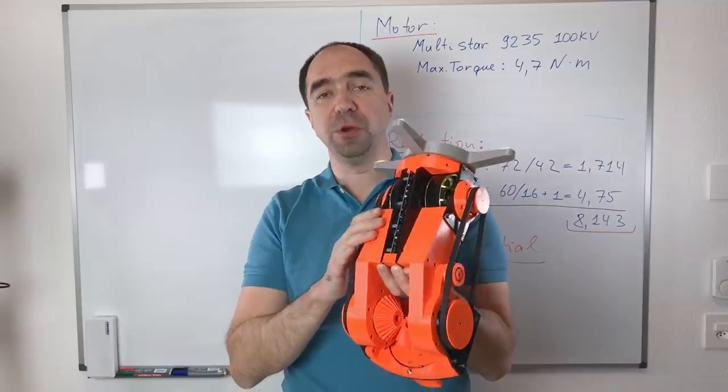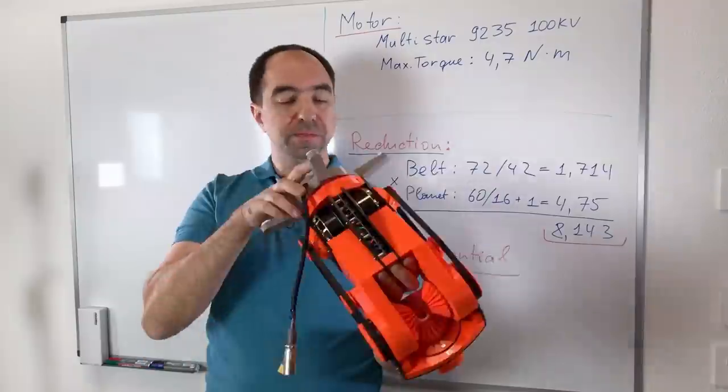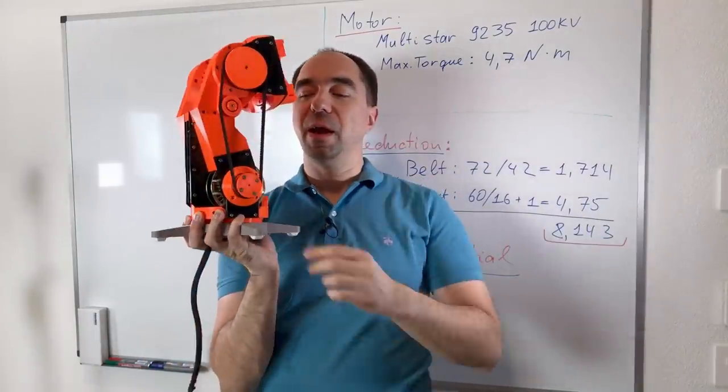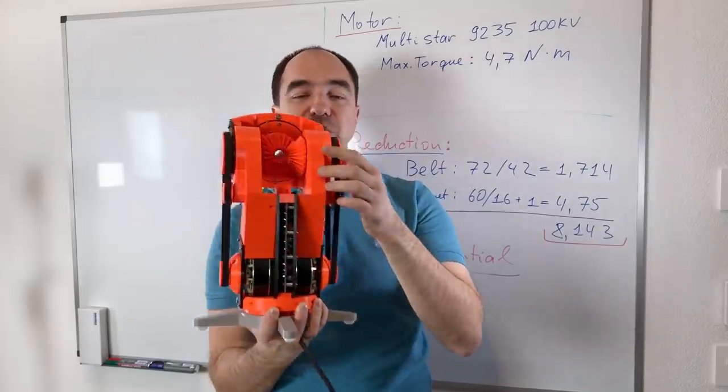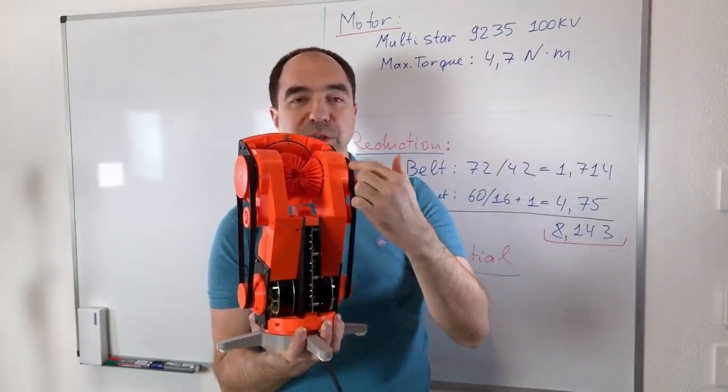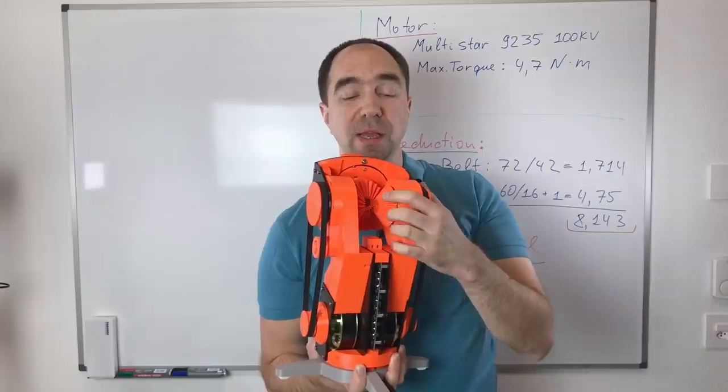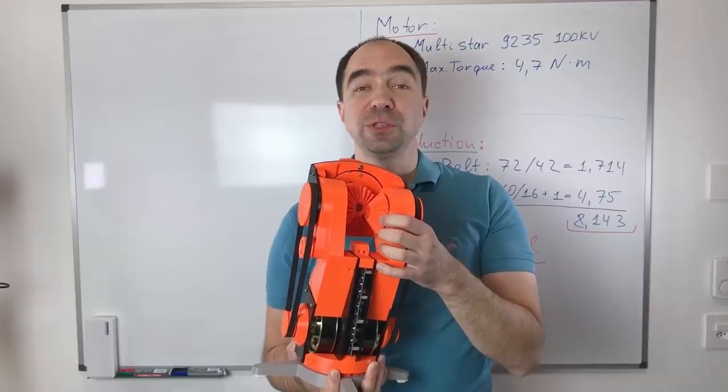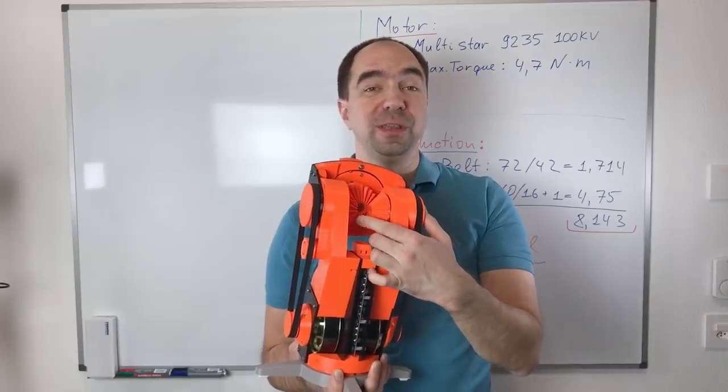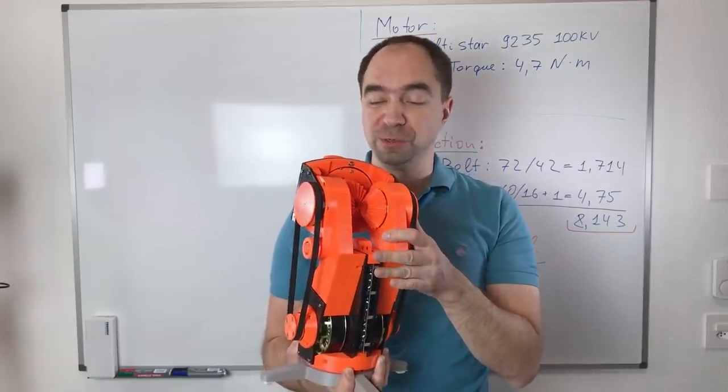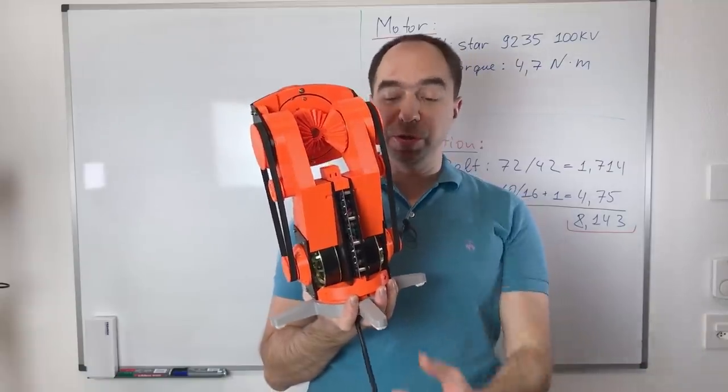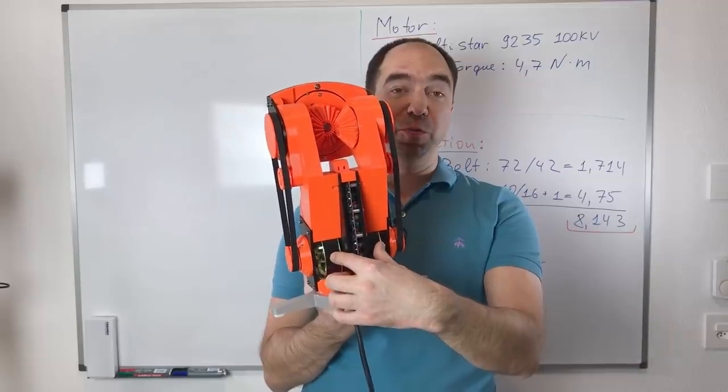And I think it weighs almost 4 kilos, which is quite a lot. Maybe I will try to reduce the weight. Again, this upper arm has belt reduction and also planetary gearbox reduction in each of these parts, and the differential with these three huge bevel gears. It took a lot of time for me to draw these bevel gears in Fusion 360, but finally they work quite well.